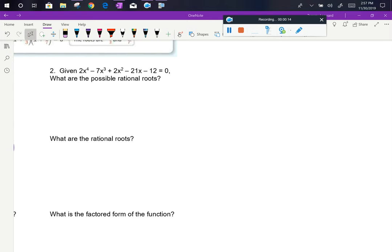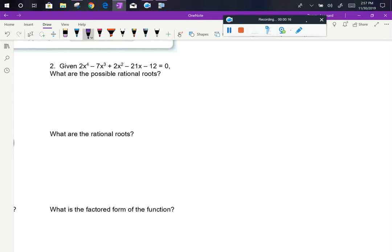So again we're being asked to come up with a list of p over q's. So first we list the possible p's, the factors of negative 12. Well we've got 1 and 12, we've got 2 and 6, and we've got 3 and 4. Those are all the factors of 12.